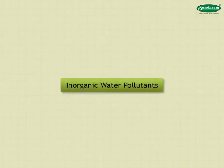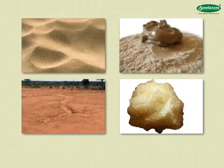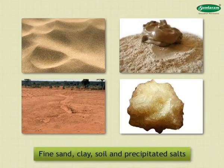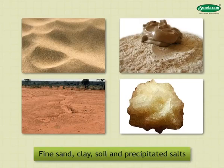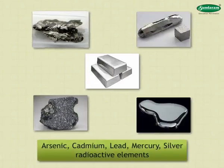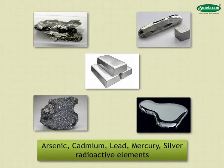Inorganic Water Pollutants: Water contains some suspended particles which may consist of fine sand, clay, soil and precipitated salts, and some dissolved particles such as rock and other compounds from the earth. Toxic metals like arsenic, cadmium, lead, mercury, and silver are the most harmful pollutants.